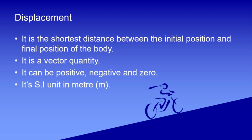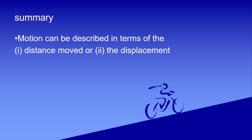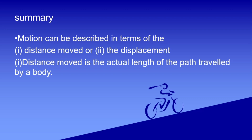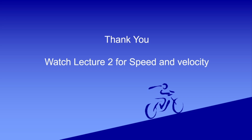So let's sum up what we learned today: Motion — agar reference point ke hisaab se position badal rahi hai, toh body motion mein hai. We can describe it by two physical quantities: Distance — actual length of path traveled, scalar quantity, always positive. Displacement — shortest distance between initial and final position, vector quantity, can be positive, negative, or zero. Both have SI unit meter. That's all for Lecture 1. Please tune in for Lecture 2 on speed and velocity. Thank you, bye-bye!